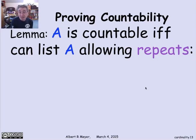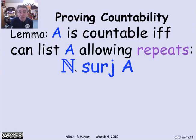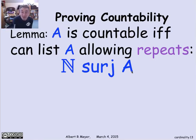The lemma says that if there's a surjective function from the non-negative integers to A, then A is countable. If A is finite, there's clearly such a surjection — there are extra non-negative integers you don't need. For a finite set with 10 elements in A, map 0 through 9 to those elements and map every other non-negative integer to the last element of A.